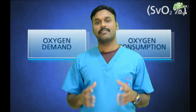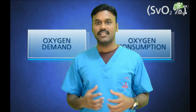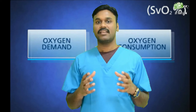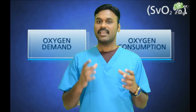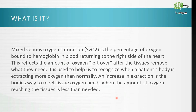Mixed venous oxygen saturation, or SVO2, is the percentage of oxygen bound to hemoglobin in blood returning to the right side of the heart. This reflects the amount of oxygen left over after the tissues remove what they need. It is used to help us recognize when a patient's body is extracting more oxygen than normal — an increase in extraction is the body's way to meet tissue oxygen needs when the amount of oxygen reaching the tissues is less than needed.